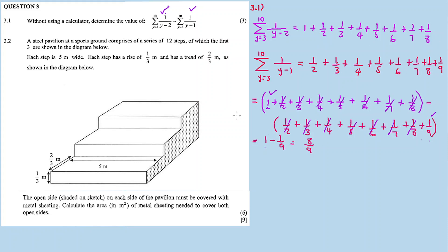Now 3.2: a steel pavilion at a sports ground comprises a series of 12 steps, of which the first 3 are shown in the diagram below. There are 12 steps in total. Each step is 5 meters wide, each step has a rise of 1 over 3 meters and a tread of 2 over 3 meters. The open shaded side of the pavilion must be covered with metal sheeting. Calculate the area of steel sheeting needed to cover both open sides.